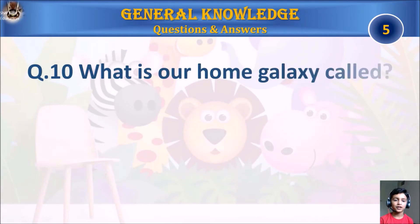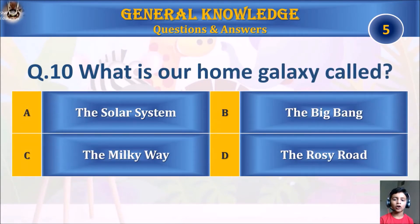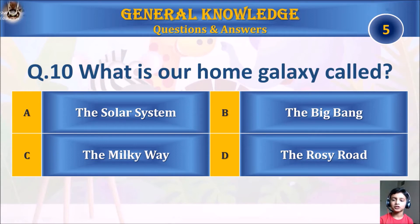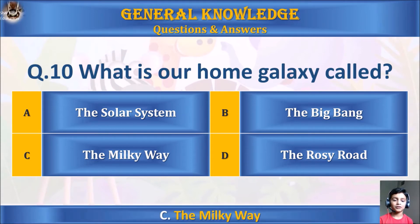Question 10: What is our home galaxy called? A. The Solar System, B. The Big Bang, C. The Milky Way, or D. The Rosy Road. Your time starts. The answer is C. The Milky Way.